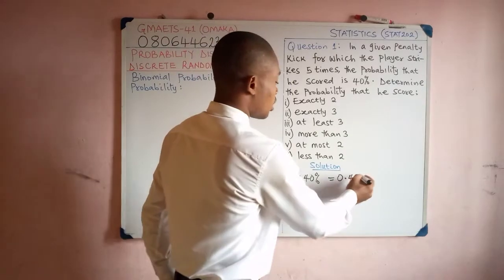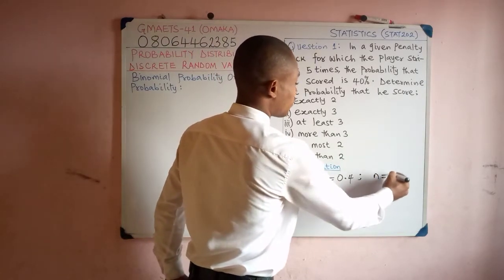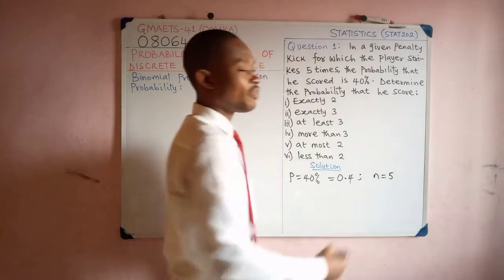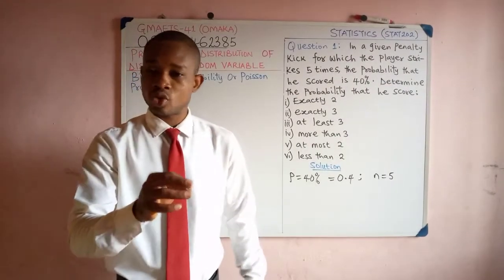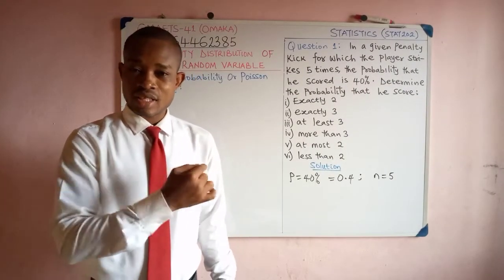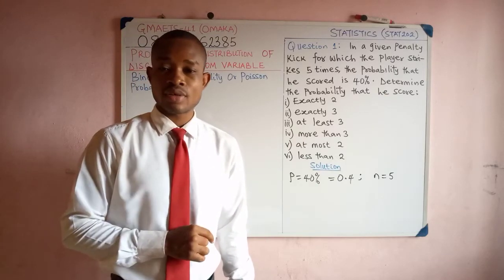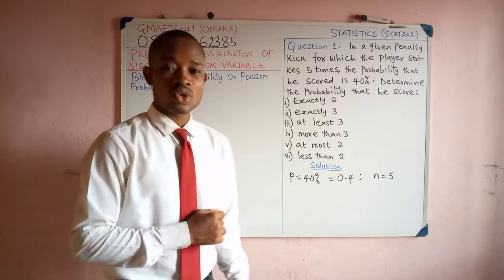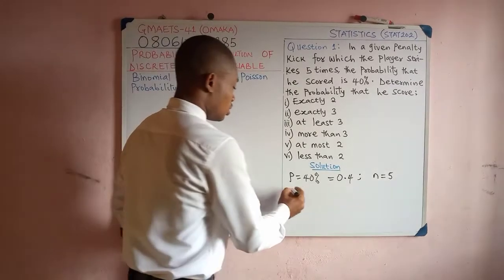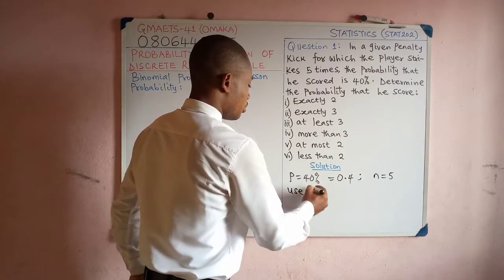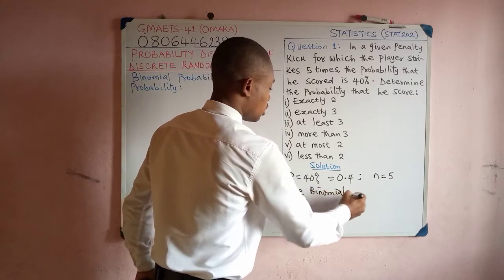Let us see the number of trials. The player is to take the penalty kick five times. Five is small — it is a small number of trials. Therefore it satisfies binomial probability distribution. So we are going to solve this using binomial distribution.